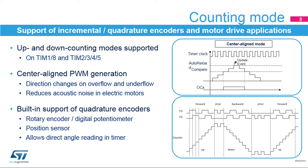The counting direction can also be automatically handled when the timer is in encoder mode. Quadrature encoders are typically used for high-accuracy rotor position sensing in electrical motors or for digital potentiometers. From the two outputs of a quadrature encoder sensor, also called an incremental encoder, the timer extracts a clock on each active edge and adjusts the counting direction depending on the relative phase shift between the two incoming signals. The timer counter thus directly holds the angular position of the motor or potentiometer.